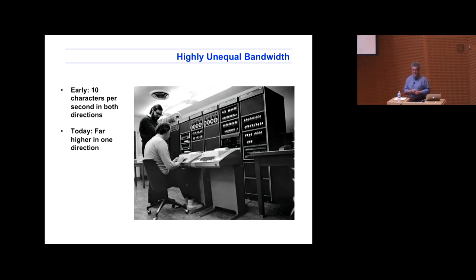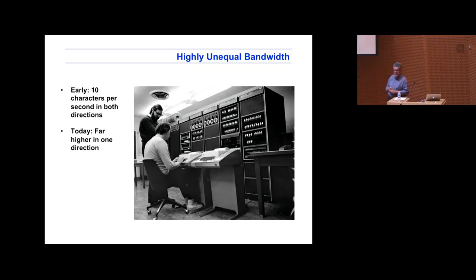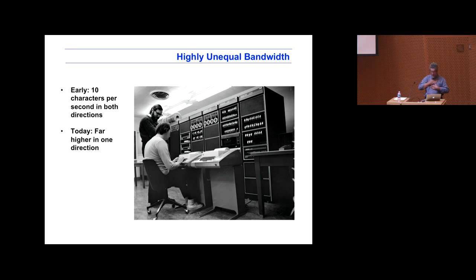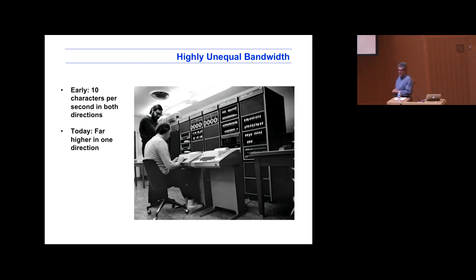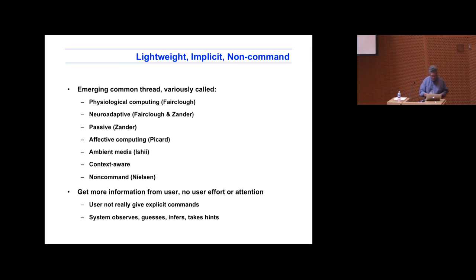Who knows who the two people in the picture are? It's a famous picture from Bell Labs. Standing up is Dennis Ritchie, sitting down is Ken Thompson — the people who wrote Unix. It has nothing to do with my talk; I just thought if I'm going to show a picture of a teletype, I'll show you a cool one. The computer in the background is called the PDP-11 — that was what they wrote Unix on.